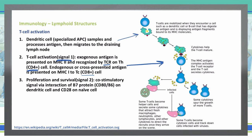Moving to Signal 2 — the proliferation and survival stage — this is a co-stimulatory signal where B7 proteins, specifically CD80 and CD86 on a dendritic cell, interact with CD28 on a naive T cell.